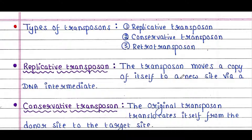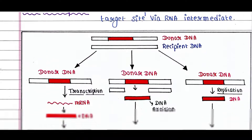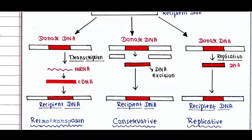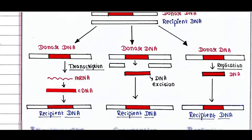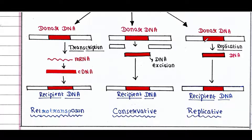First is replicative transposons. The transposon moves a copy of itself to a new site via a DNA intermediate. Here we have the donor DNA and the recipient DNA. The red part of the donor DNA is the transposon. The donor DNA gets replicated and inserted into the recipient DNA — this is replicative transposition.